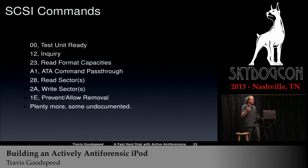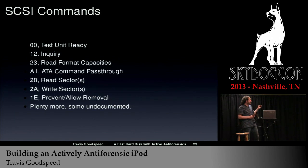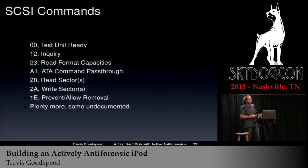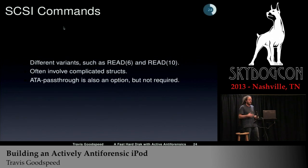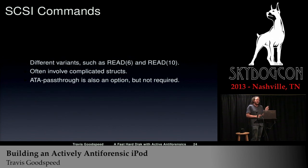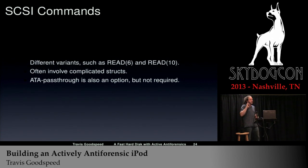There's also command 0x1E, which allows you to allow or prevent media removal — like when a CD-ROM drive refuses to eject media. You can also have disks of multiple capacities, the same way old floppy drives could be formatted to different sizes. You can do the same in SCSI on a modern hard disk. And there are different variants of read commands based on how wide the logical block address is, because as disks became larger they had to make new commands to support the larger address space.